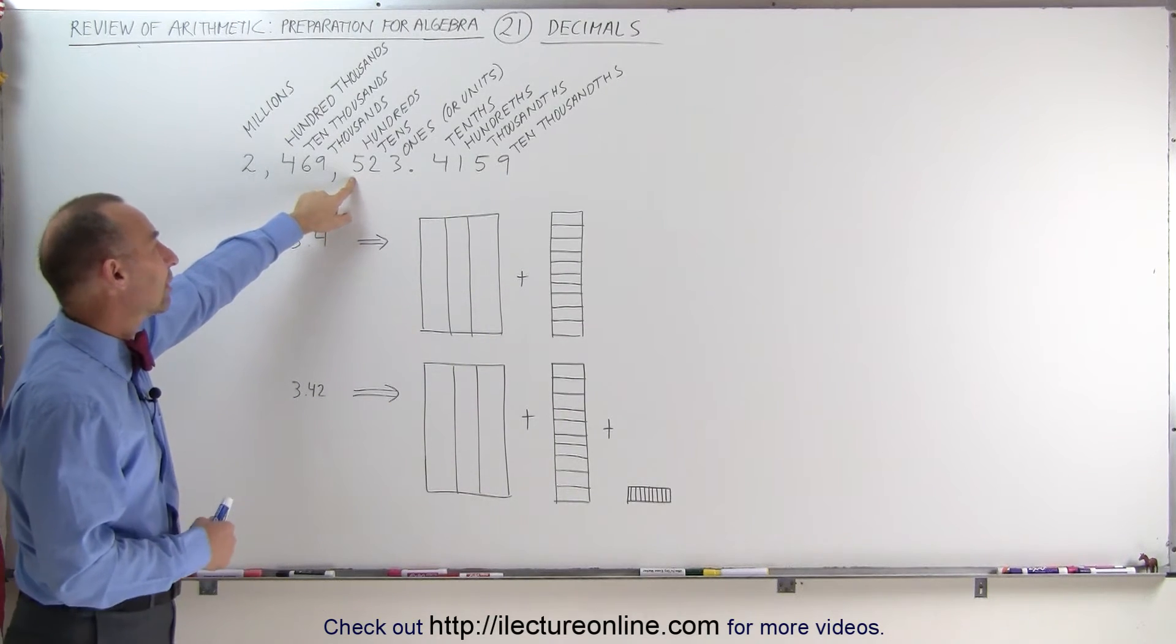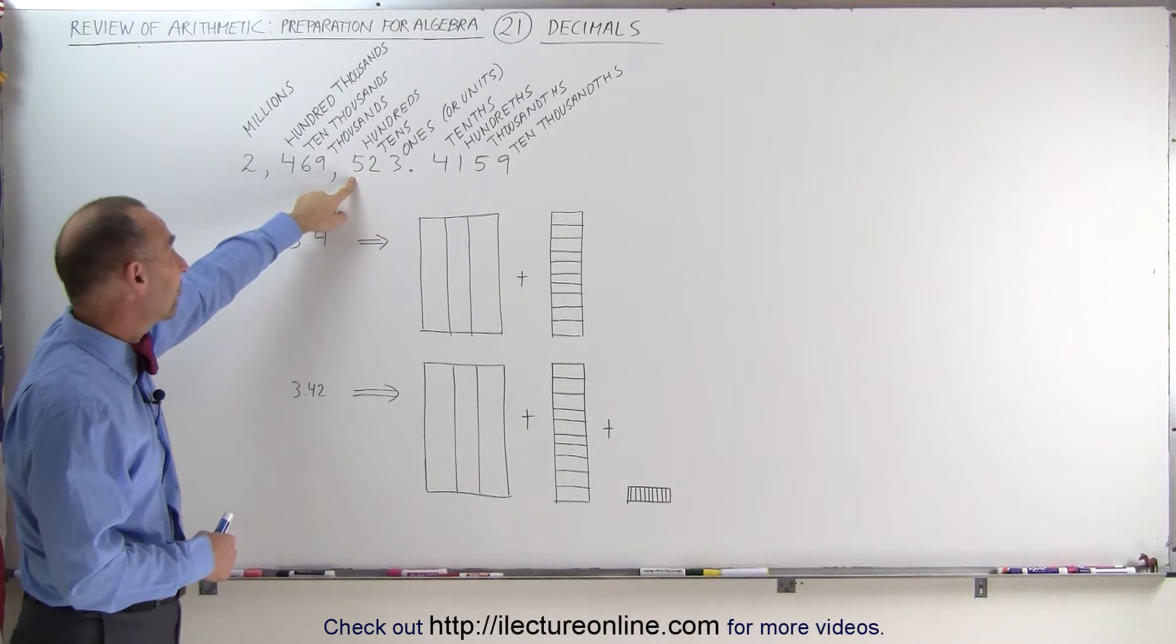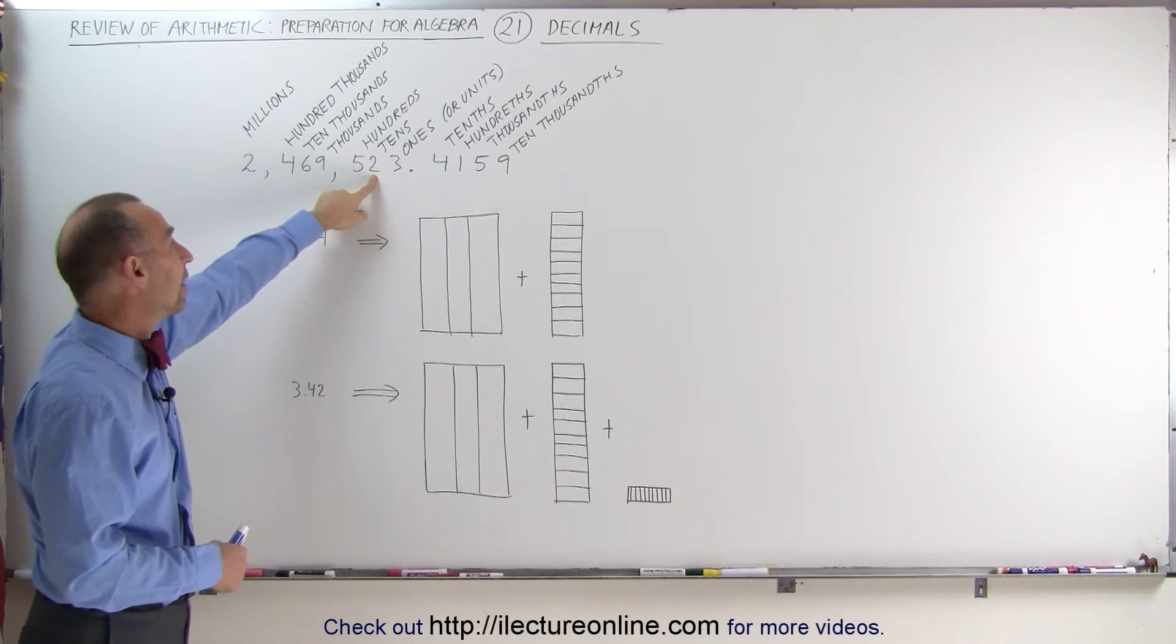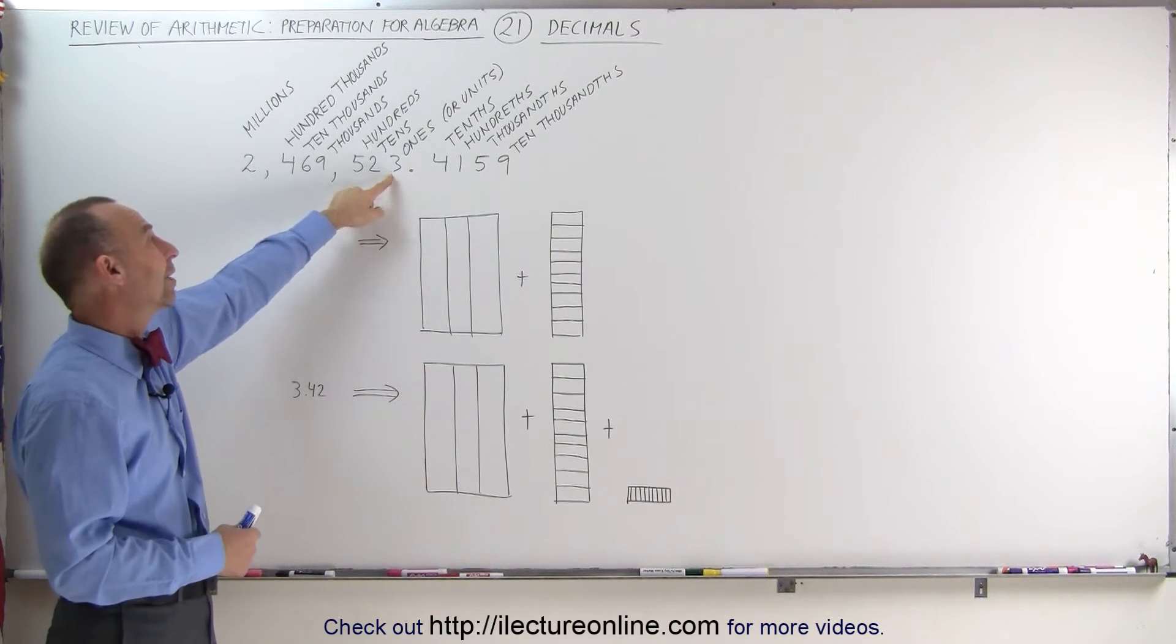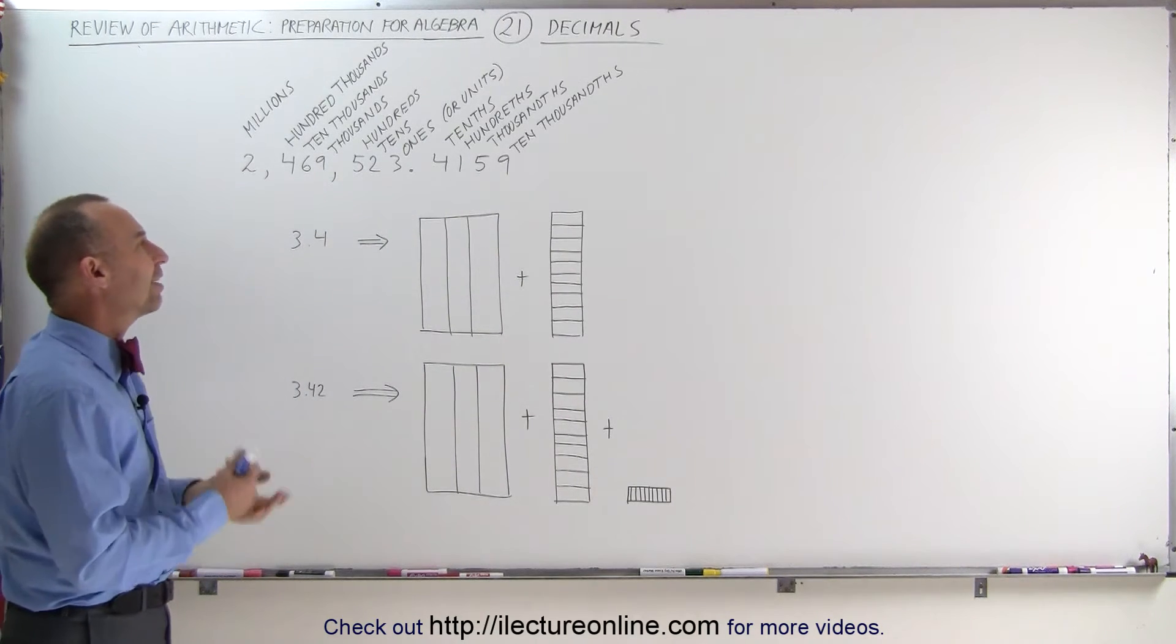Then we get into this number here, which represents how many hundreds you have, 5 of them. How many tens you have, 2 of them. And how many ones you have, or units you have, 3 of them. Then we have a decimal place.